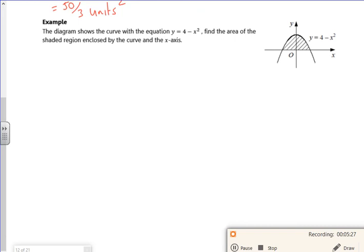So then it says the diagram shows the curve for the example, 4 minus x squared. Find the shaded area. So for this one now, if you look, I need to find out what these points are here. I haven't got a clue what they are, so I need to find the roots.